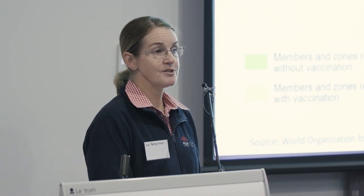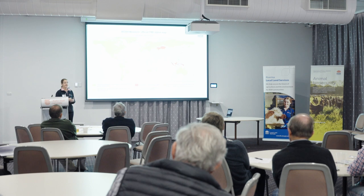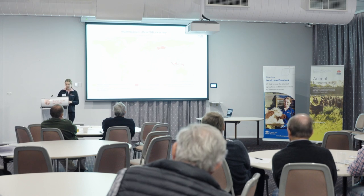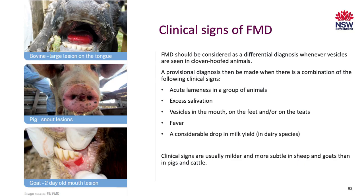Vaccines will be a part of a response if needed, but the sooner we can be declared free of disease without vaccination, the more export markets will reopen. Planning for how we use vaccines in a response will be crucial. Whenever you see vesicles in cloven-hoofed animals, you should do an FMD exclusion. If you're not sure how to do that, ring your district vet or the 1800 number and we can step you through what samples to collect.